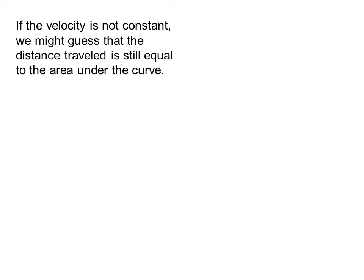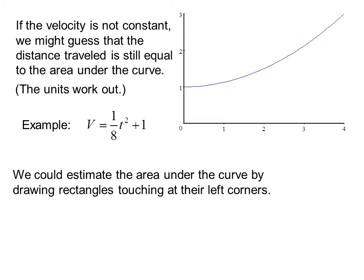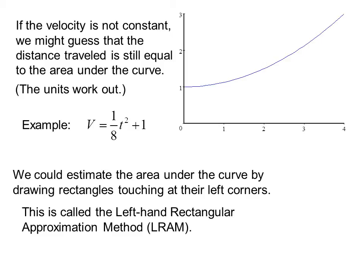If the velocity is not constant, we might guess that the distance traveled is still equal to the area under the curve. The units work out. Example: v equals 1/8 t squared plus 1. We could estimate the area under the curve by drawing rectangles touching at their left corners. This is called the Left Hand Rectangular Approximation Method, or LRAM, in our book.